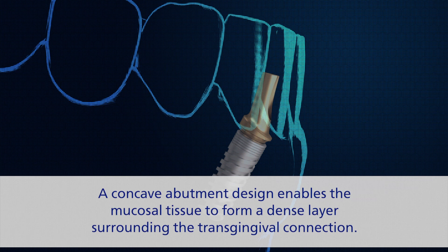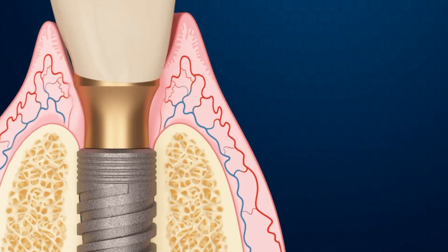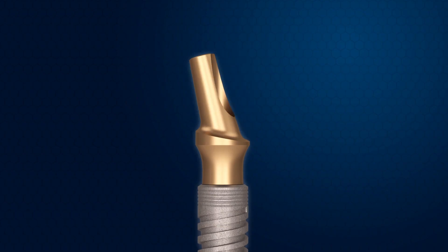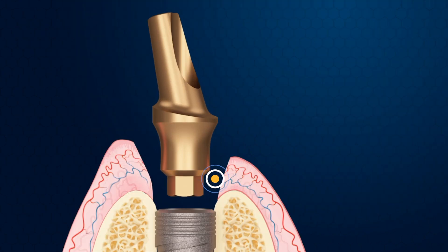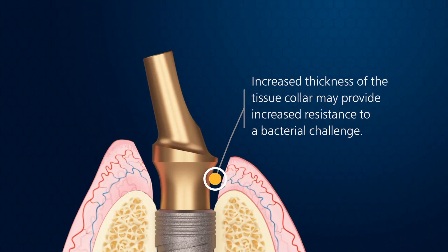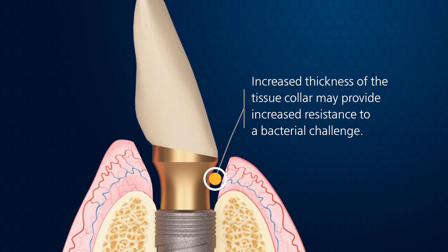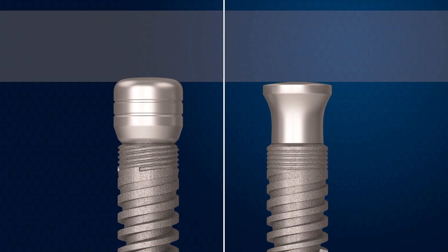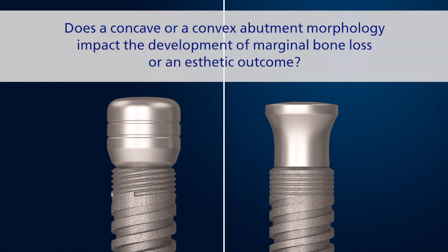The concept of a concave abutment design enables the mucosal tissue to form a dense layer surrounding the transgingival connection. The visible outcome is reduced tissue transparency and reduced metal visibility of the abutment. One of the considered long-term effects is increasing the thickness of the tissue collar, which may provide increased resistance to a bacterial challenge.